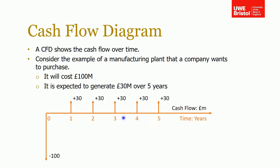You have your time on the x-axis — it doesn't have to be years, it's the time scale suitable to the project, so it could be years, months, days, or weeks. I've chosen years for this example. The direction of the line indicates sign: if it's above the line it's positive, meaning income generated into the project; if it's below the line it's negative, meaning money spent by the project.